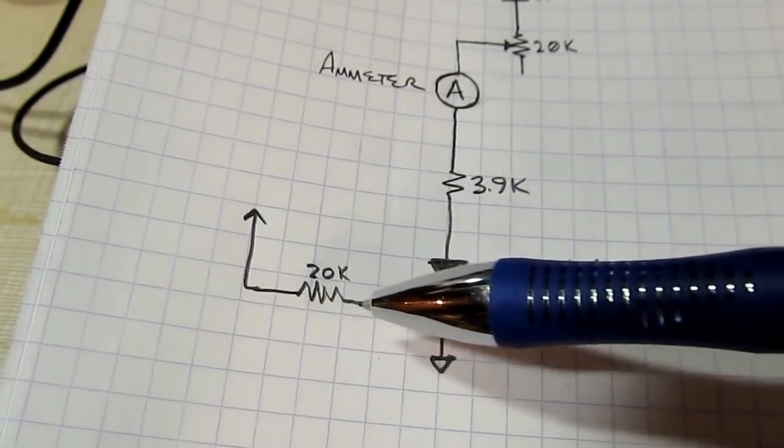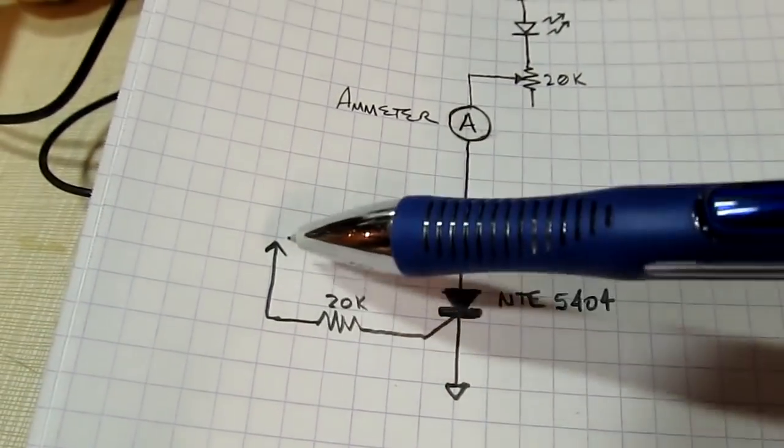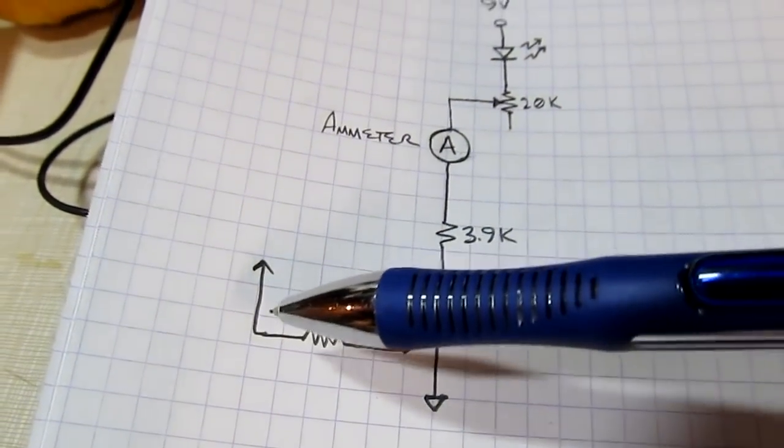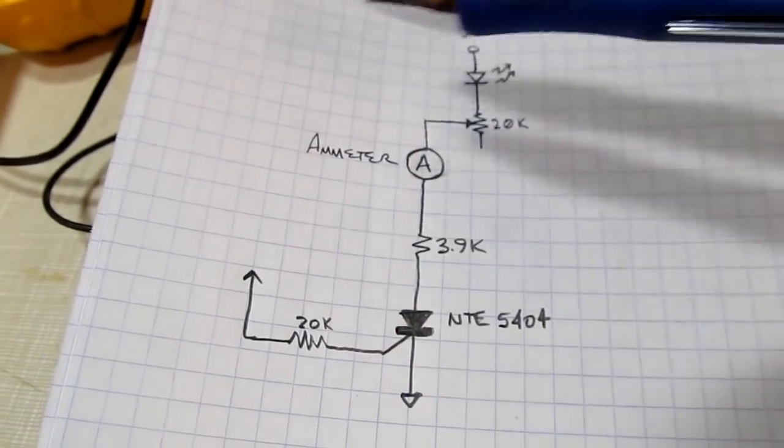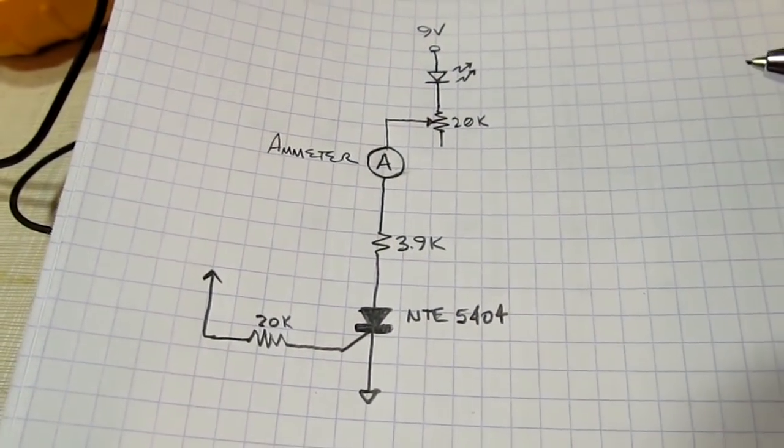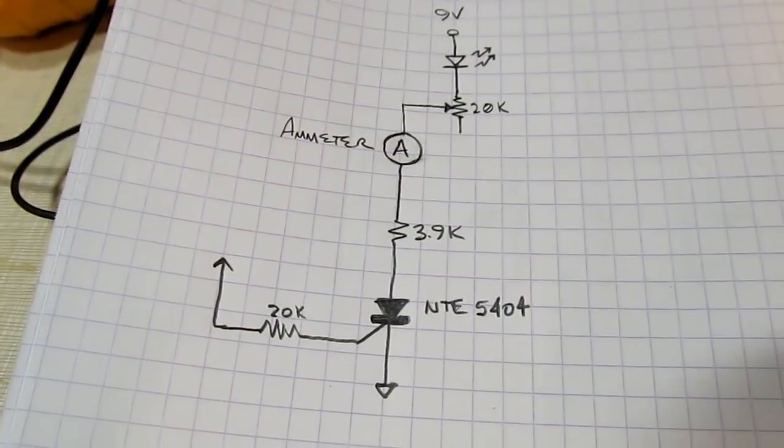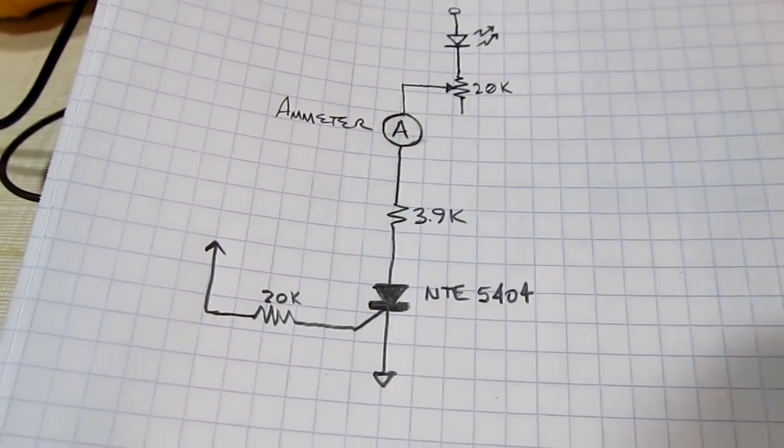And then I just have a 20K resistor connected to the gate with the other lead kind of floating. And what that allowed me to do is to connect it momentarily up to, like, the positive supply to trigger the SCR.